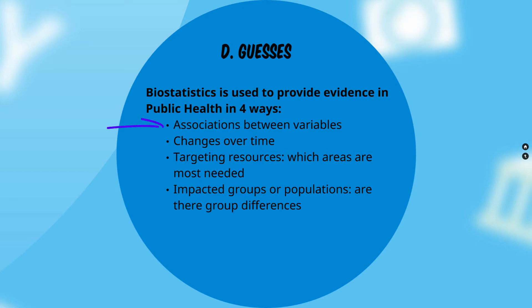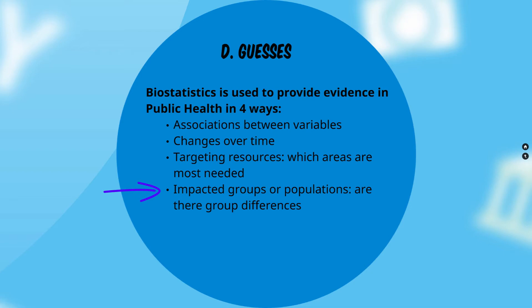Biostatistics can look at associations between variables, help look at changes over time, and be used for targeting of resources. It can also examine which impacted groups or populations exhibit group differences.